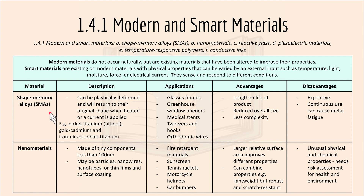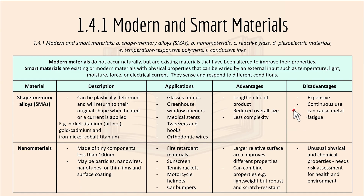With the first one, shape memory alloys — SMAs — they can be plastically deformed and will return to their original shape when heated or a current is applied. Applications could be glasses frames, medical stents or tweezers. An advantage is that they can lengthen the life of the product, reduce overall size and are less complex. A disadvantage is that they are more expensive and continuous use can cause metal fatigue.